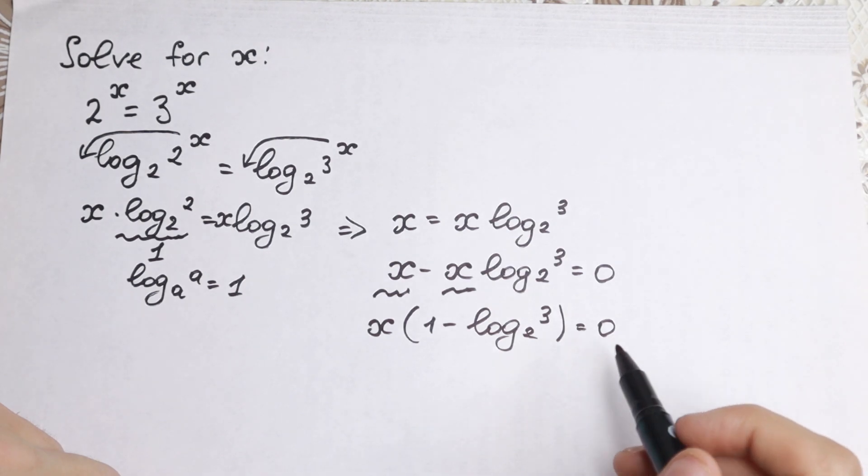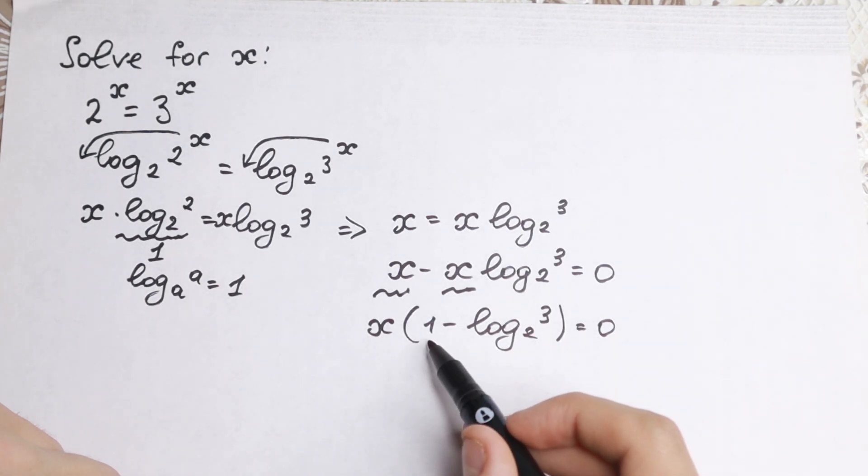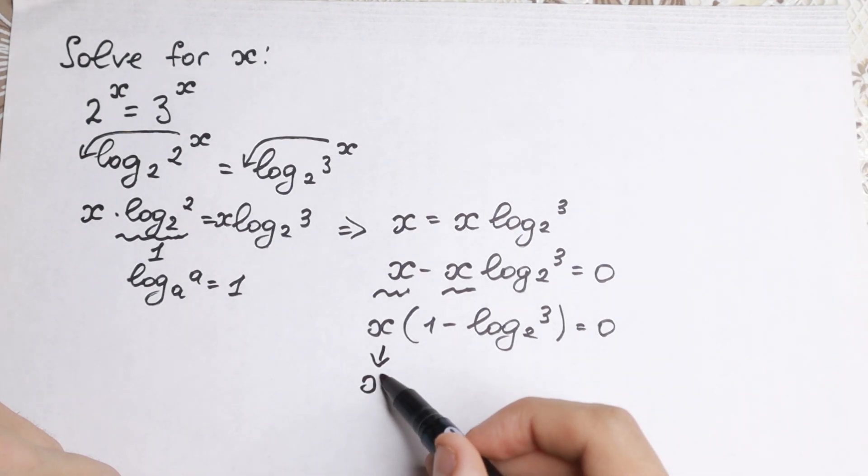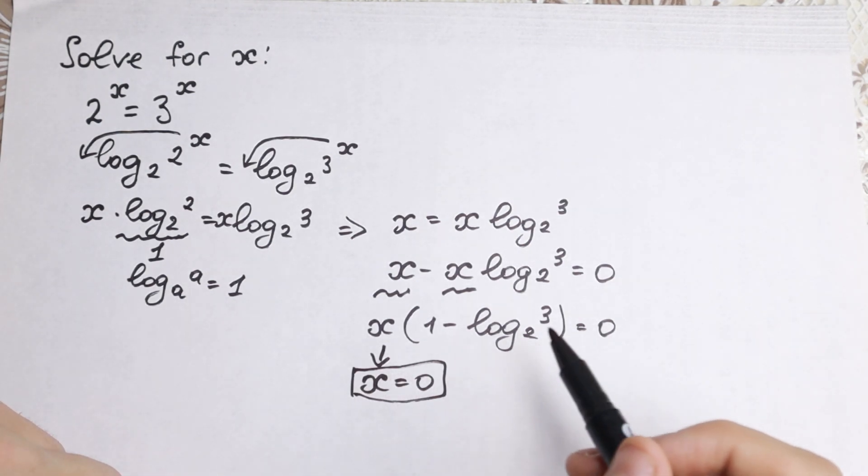We have a product equal to 0, then one element must equal 0. But this element cannot be equal to 0, because this is a constant which is not equal to 0. So x equals 0 will be our solution.